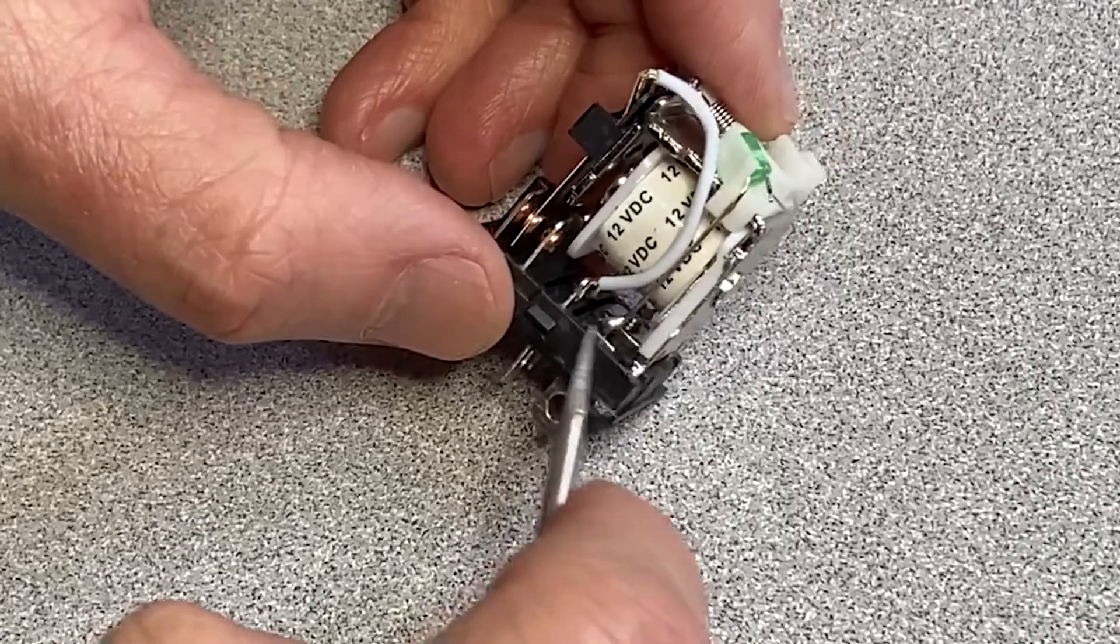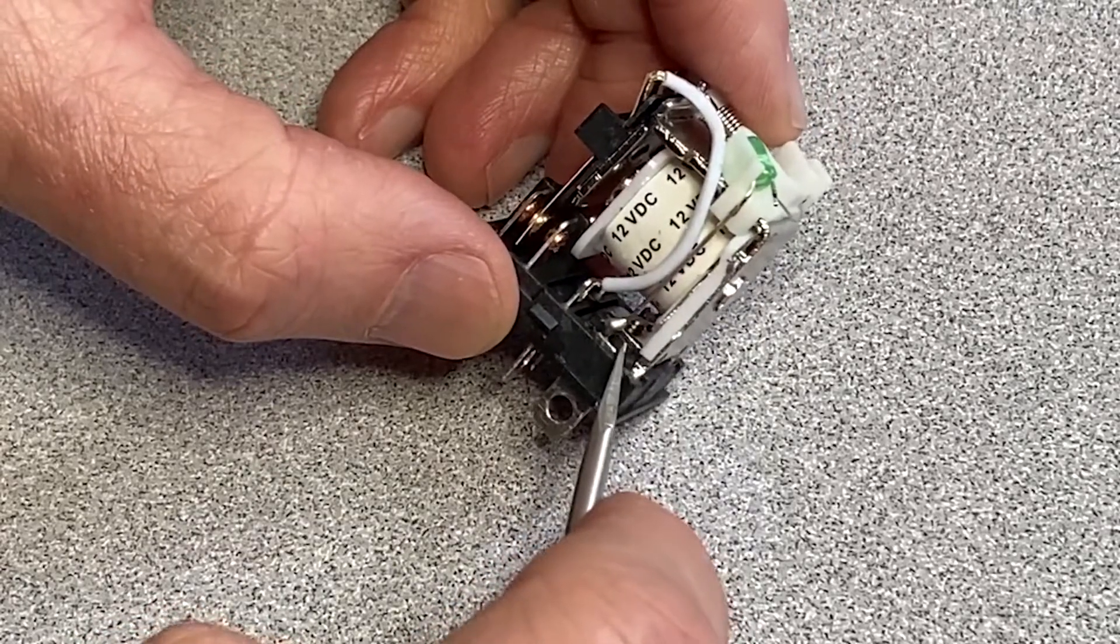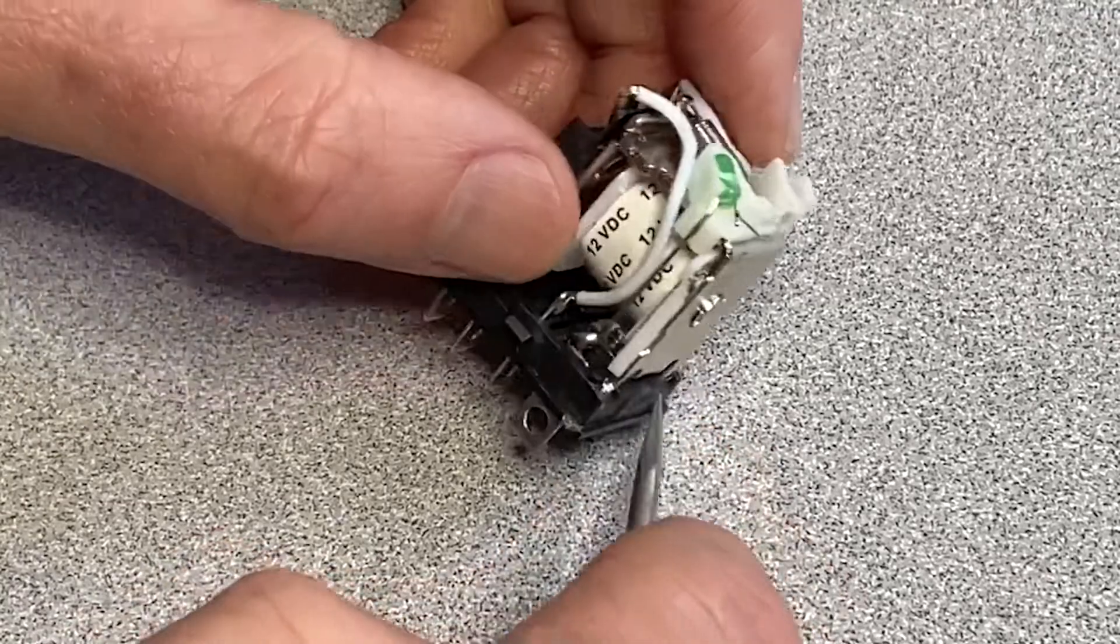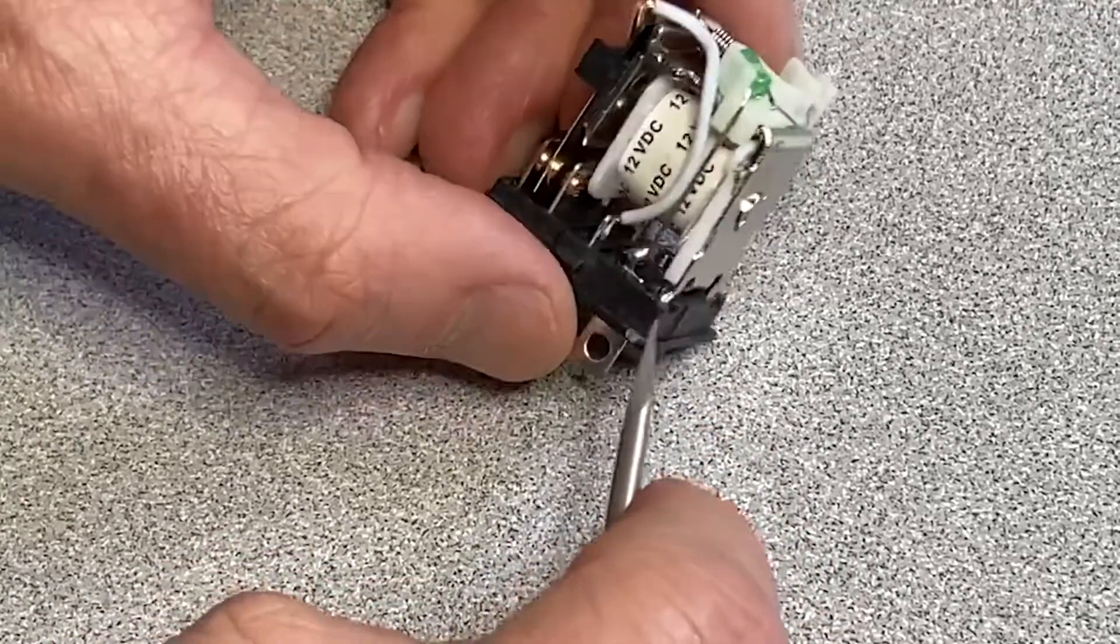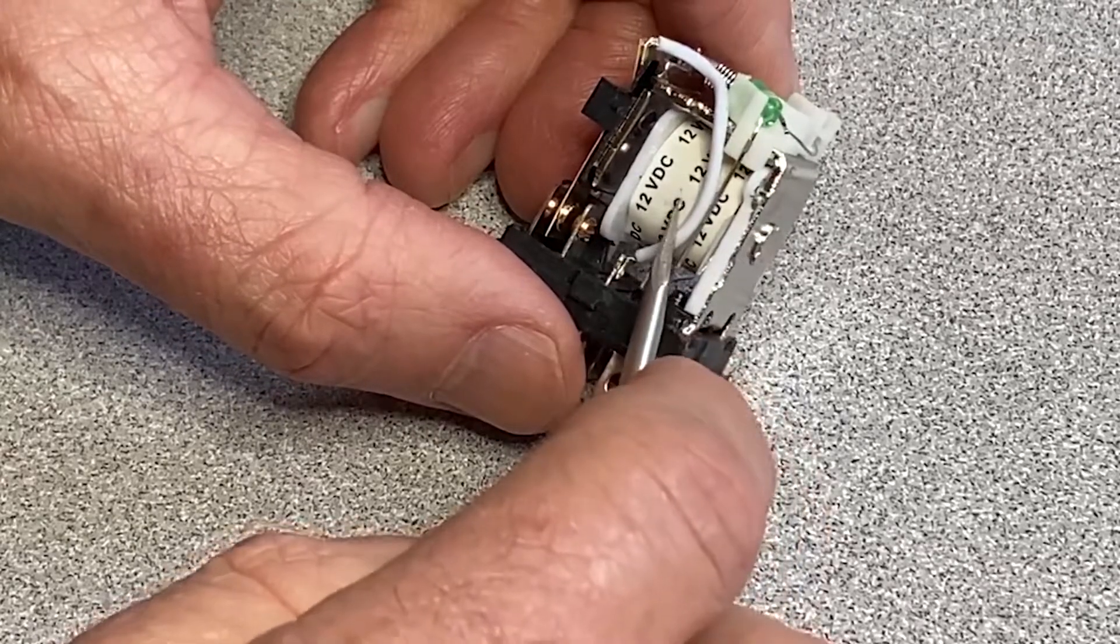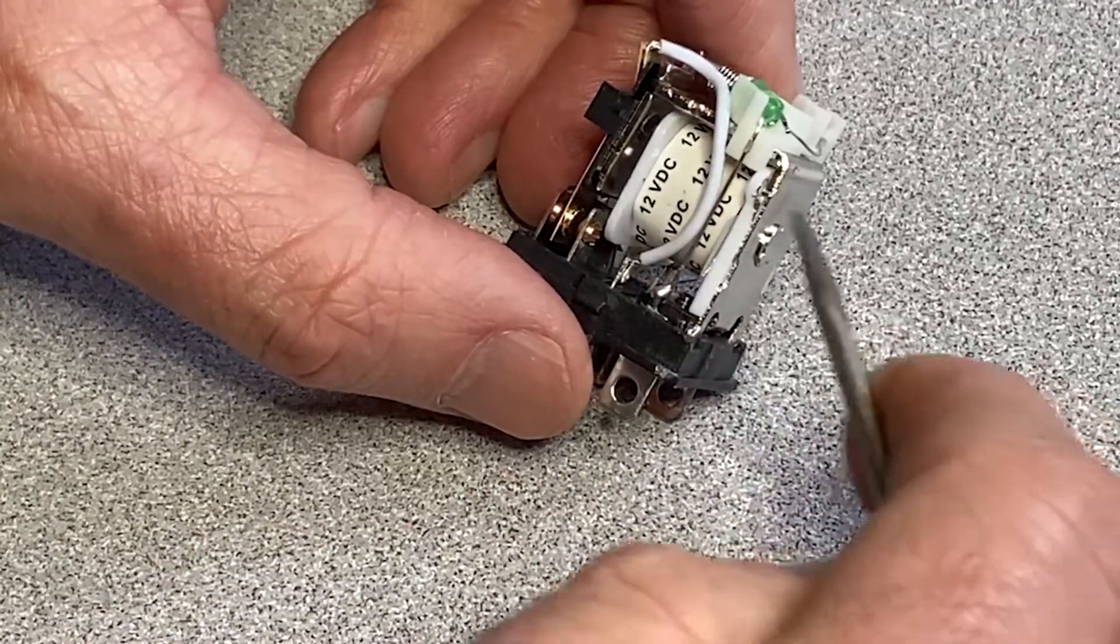the electricity comes in, goes up, and it takes one of two paths. One path takes it through the LED and lights it out to ground. The other one, there's a tiny little wire. I don't even know if you can see it. But that one goes into the relay, runs around in circles, creates a magnet, closes the relay.